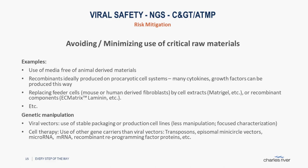When you are using vectors for manipulation of the cell product or for in vivo applications, the standard procedure right now is using a cell line that you transfect with plasmids and then start producing. However, if you move to packaging cell lines or even production cell lines, that can bring some safety because you have more time to characterize those materials after transfection. Another option is using carriers other than viral vectors — transposons, episomals, and similar — all of which help minimize the risk by reducing animal or human-derived materials.